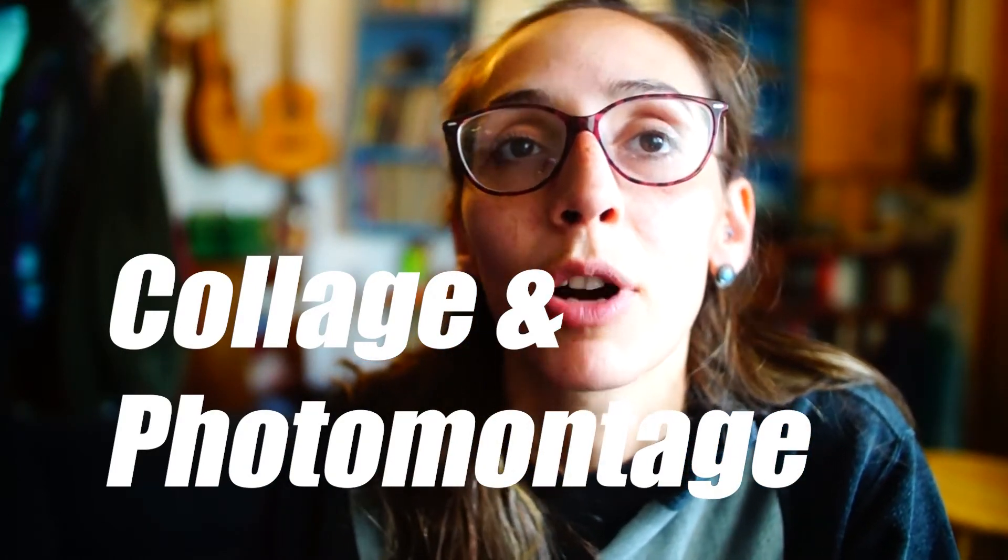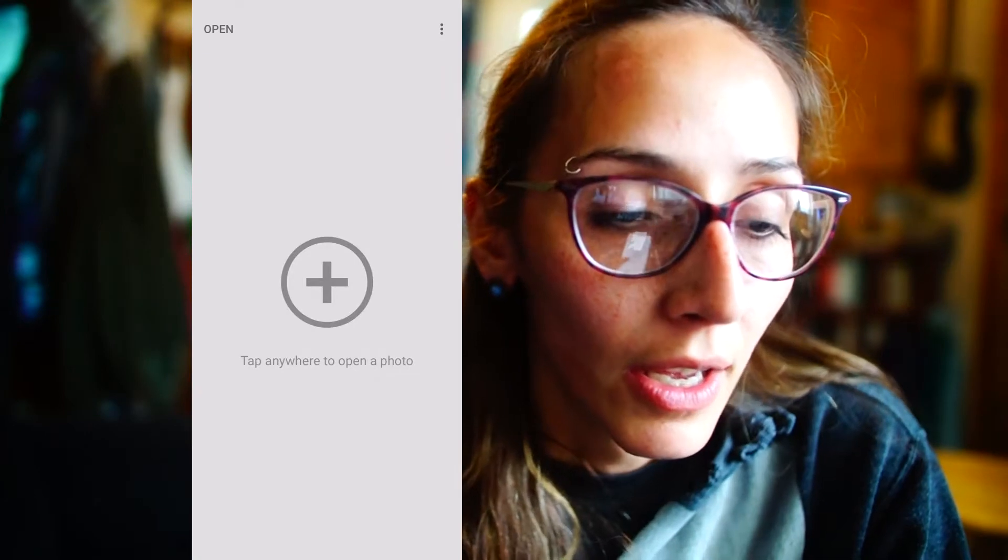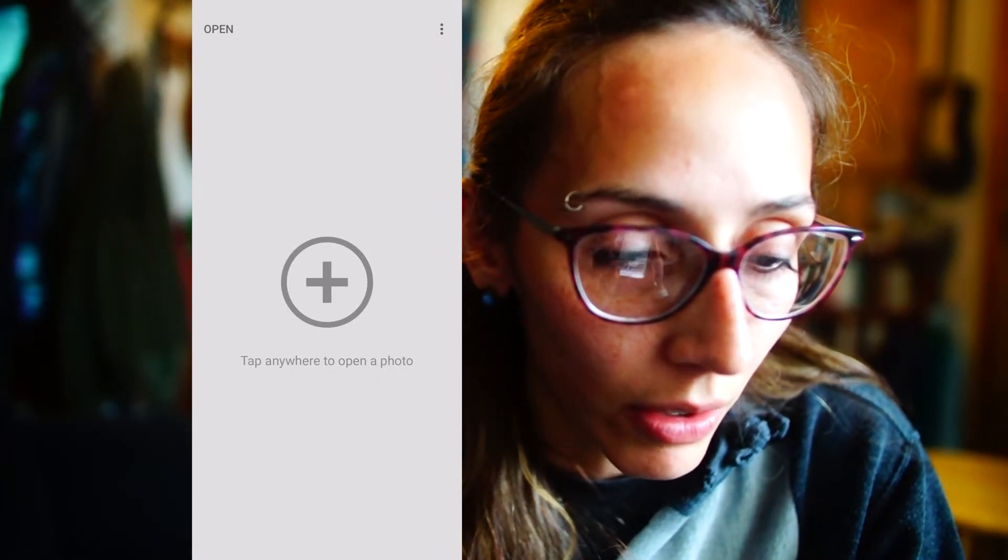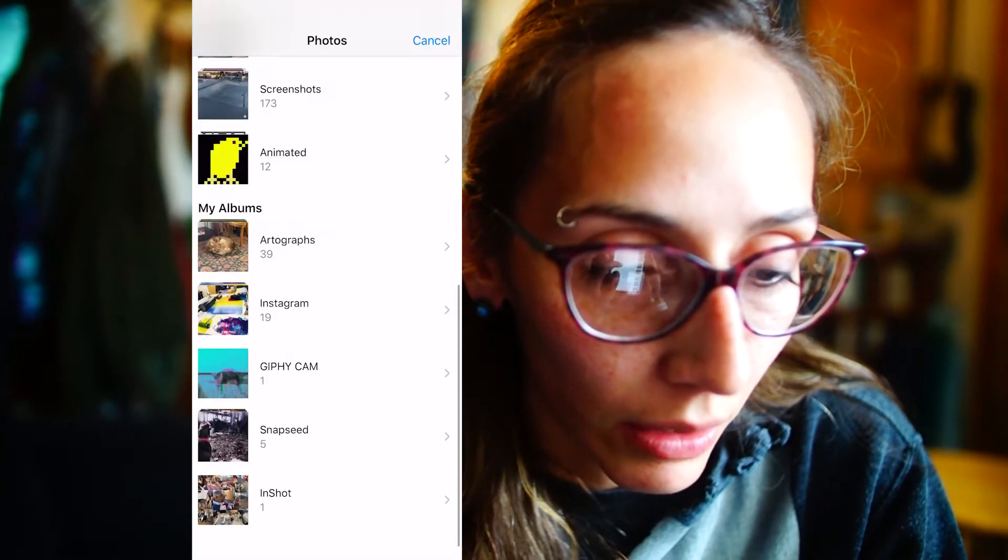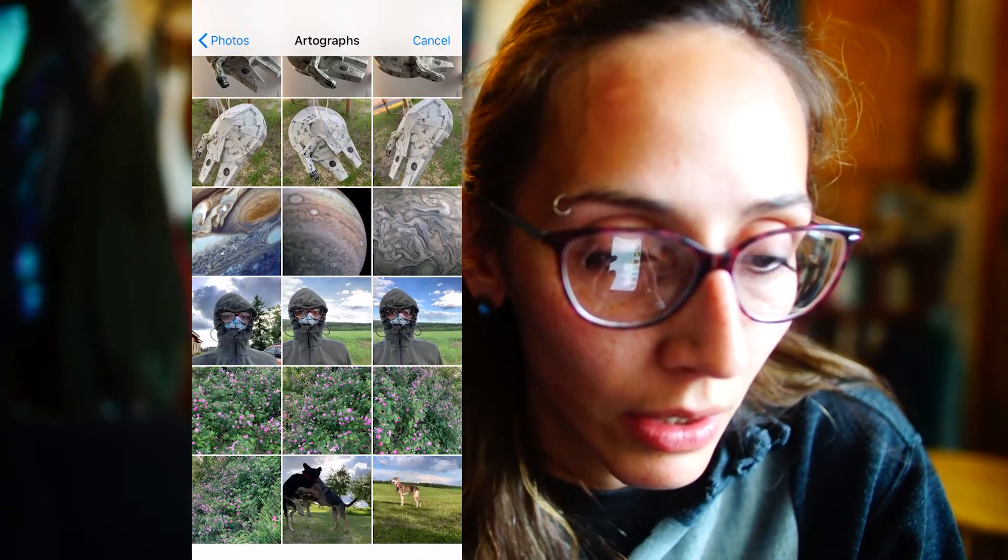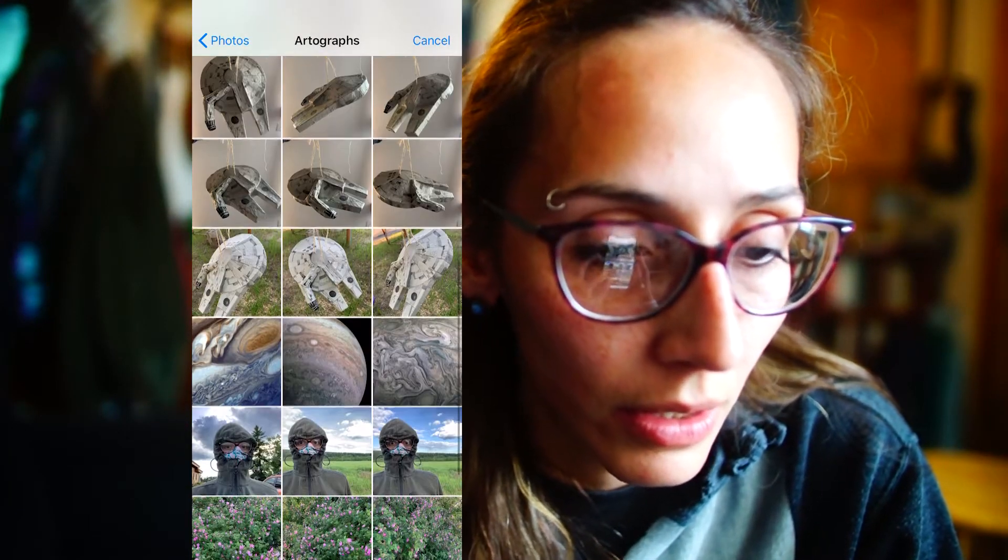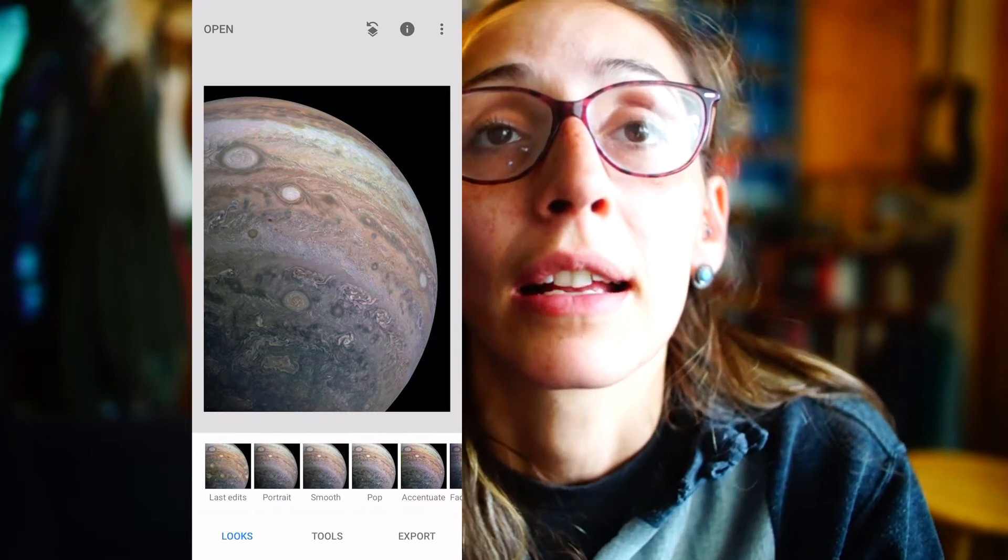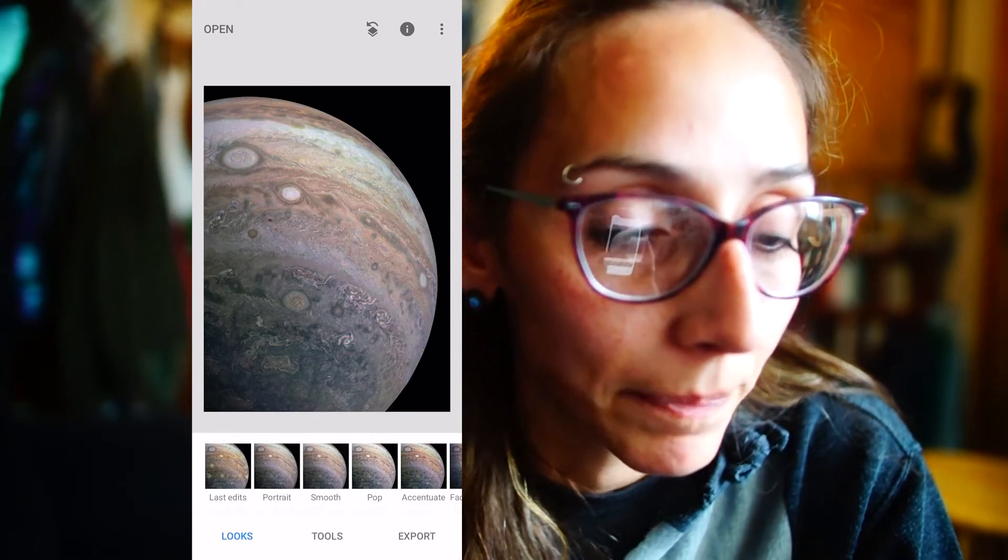So in Snapseed, go ahead and click start, open from device, and then I'm going to go to photos and choose this photo of Jupiter that I found from the NASA media gallery.